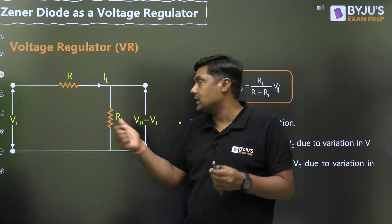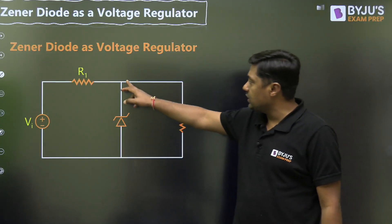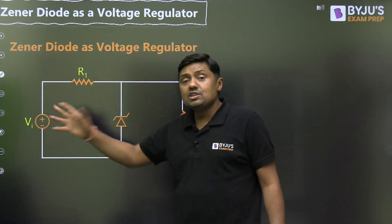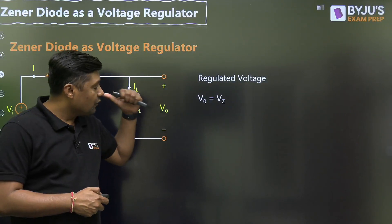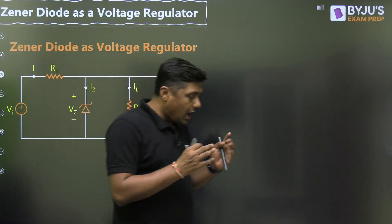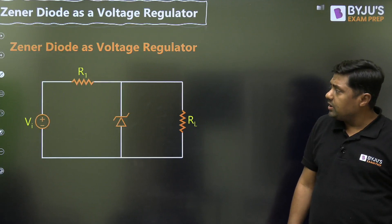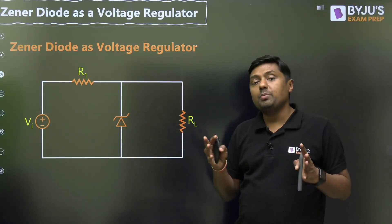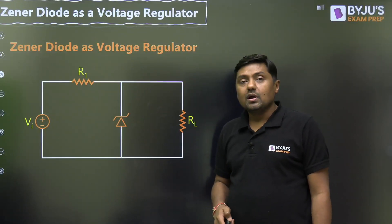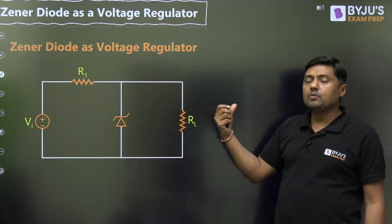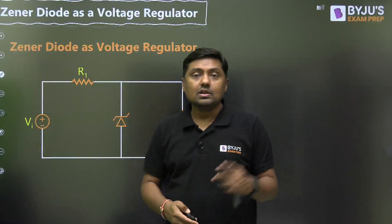In the regulated circuit with the Zener diode as a voltage regulator, Vi is not constant — it varies from a maximum to a minimum value. For the full range of Vi and the full range of R_L, the Zener diode should remain in the breakdown region. Once in breakdown, the voltage across the Zener diode is constant, so V0 = Vz. Despite variations in Vi and R_L, if the Zener remains in breakdown, the output stays constant.